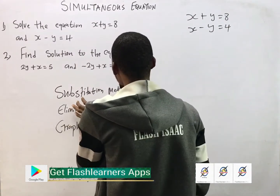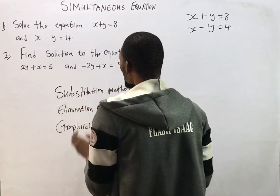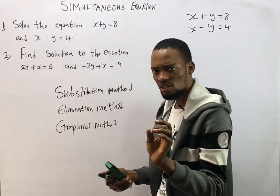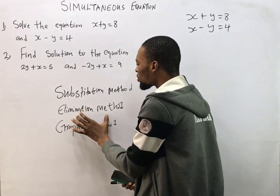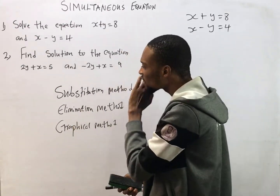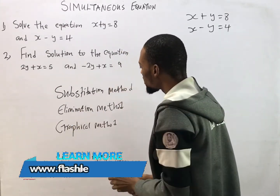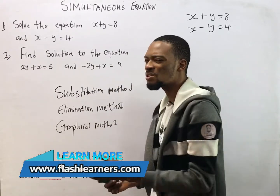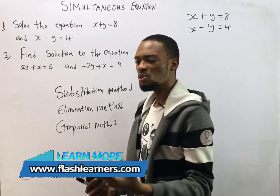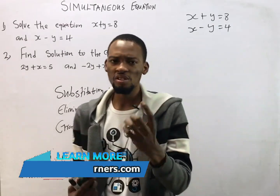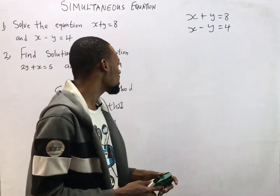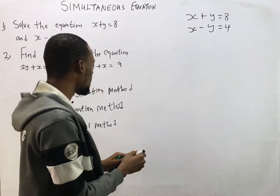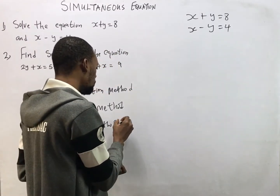These are the methods you can use to solve simultaneous equations. Substitution method simply means to substitute, elimination method simply means to eliminate, and graphical method simply means to use a graph to solve simultaneous equations. I will release a special video to cover the graphical method.